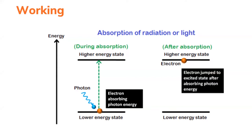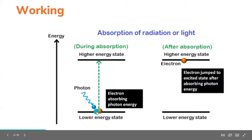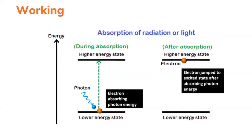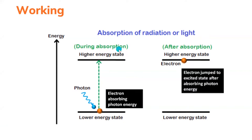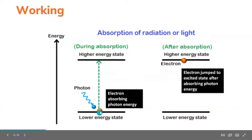In the first step — absorption — we provide some external energy to activate the process. A photon is present, and the electron in the ground state absorbs energy from this photon and jumps to the higher energy state. This is the first step: absorption. The photon comes and meets the electron, which gets activated and moves to the higher energy state.